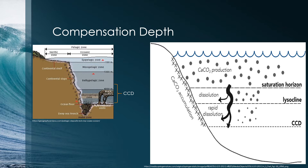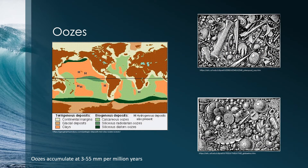This results in something called oozes. Interestingly, oozes form at a rate of 3 to 55 millimeters per million years, compared to the much slower 1 to 5 millimeters per million years of pelagic sediments. When it comes to oozes, there are two main kinds: calcareous oozes and siliceous oozes. Calcareous oozes tend to be found in warmer, shallower parts of the ocean, while siliceous oozes are found in deeper, colder portions. However, do not confuse these oozes with marine snow, as they do contain a lot of the same biogenous sediment from algae and foraminifera. Marine snow is simply the falling of these organisms, not the collection of the residues.